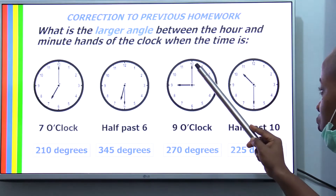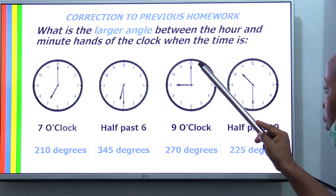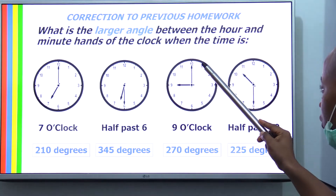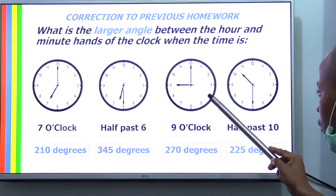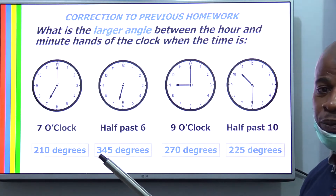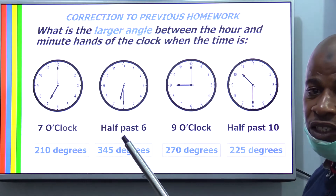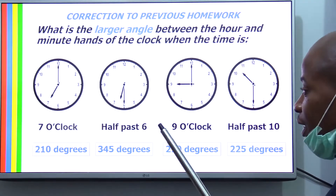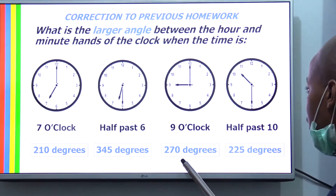This is straightforward. From here, you count one through nine — nine spaces. Each space is 30 degrees. 30 times nine is 270.